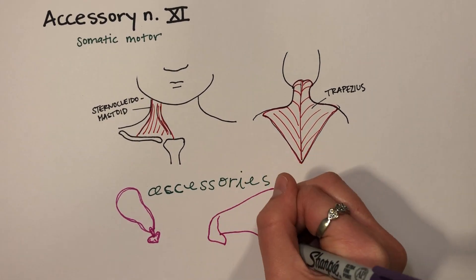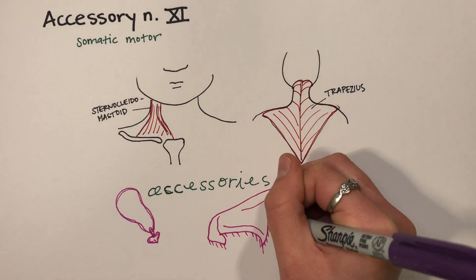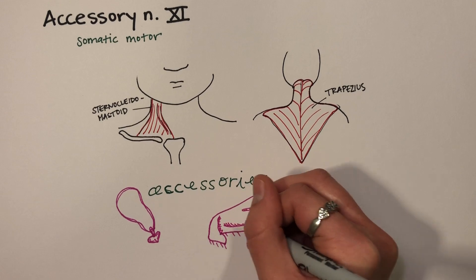And second, a shawl. The trapezius is located where a shawl would be placed. And that's it for Accessory nerve 11.